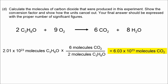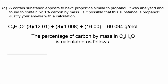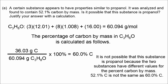Now, our final question is sort of a reminder of things you learned before. And that is, how do I calculate the percentage of carbon by mass if I'm given a formula? The way we do this is we divide the mass of carbon, in this case three carbons, is 36.03, by the mass of the entire formula, the molar mass, 60.094 in this case, and then times 100. If this percentage of carbon is 52.1%, then it's likely that this substance is propanol. But we didn't get that number. We got 60.0% carbon. So a certain substance that appears to have the properties similar to propanol, it is not possible that this substance is propanol because these two substances have different values for the percent carbon by mass.